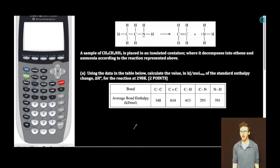Hey what's up my chemistry people! Who is ready for a thriller of a free response? It's a short one. A sample of CH3CH2NH2, also known as ethylamine, is placed in an insulated container where it decomposes into ethene and ammonia according to the reaction represented above.